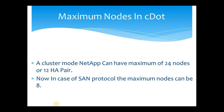The question now is: what is the maximum number of nodes in cluster mode NetApp? You can have a maximum of 24 nodes or 12 HA pairs. If you are using only NAS protocols — CIFS or NFS — then the maximum is 24 nodes. If you are using SAN protocol, the maximum nodes will be 8. There may be some variation across versions, so if you have a different or more recent answer, please put it in the comment section so everyone is aware of the latest information.